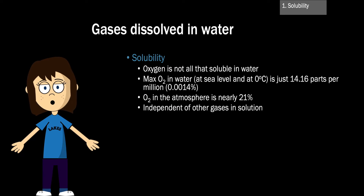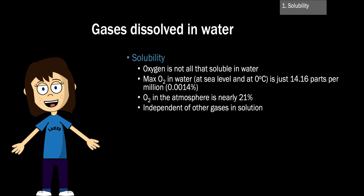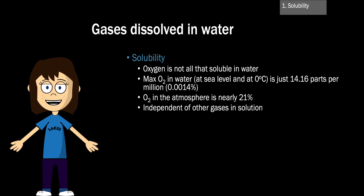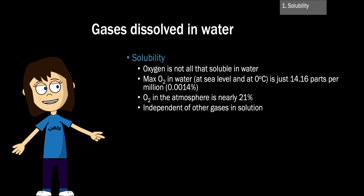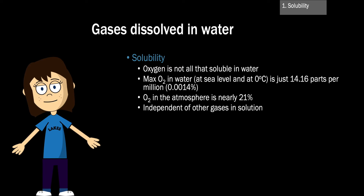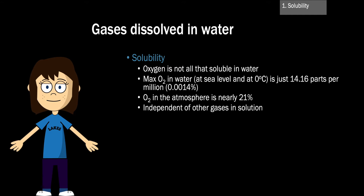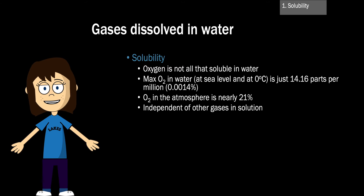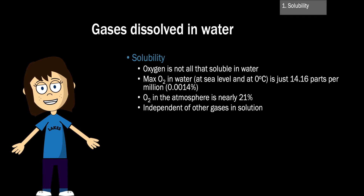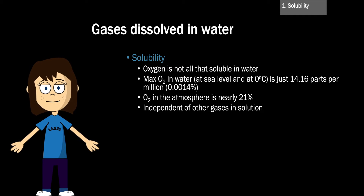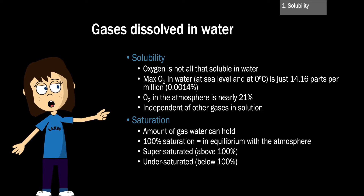We've already heard the term solubility when talking about ions in water. While we often think of solubility in reference to a solid dissolving in a liquid, solubility can also refer to the ability of a gas to dissolve in a solvent — in this case, water. Overall, oxygen is not all that soluble in water. The maximum oxygen concentration in water at sea level and at zero degrees Celsius is just 14 parts per million, or 0.0014%. In comparison, the atmosphere is composed of nearly 21% oxygen. The solubility of gases are independent of other gases in solution, and carbon dioxide actually has a greater solubility than oxygen, but a gas like methane has a much lower solubility.